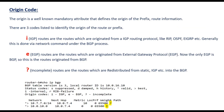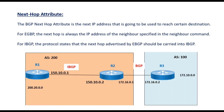Next is origin code, a well-known mandatory attribute that defines the origin of the prefix or route information. There are three codes to identify the origin: I, E, and question mark (?). If it is 'I', routes are originated from IGP protocols like RIP, OSPF, and EIGRP. If it is 'E', the route is originated from an external gateway protocol — essentially BGP — typically routes learned from a different autonomous system. If it is '?', these routes are redistributed from static or IGP into BGP.